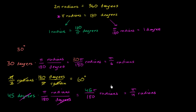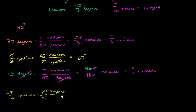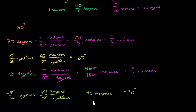Let's do one more. Say we have negative π over 2 radians — what's that going to be in degrees? We know there are 180 degrees for every π radians. The radians cancel out, the π's cancel out, and you have negative 180 over 2, which is negative 90 degrees. Hopefully you found that helpful — the more example problems, the better, and it'll become more intuitive.